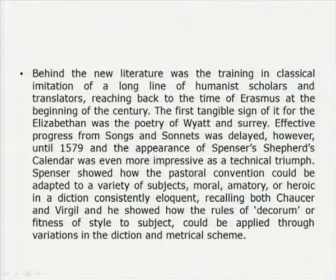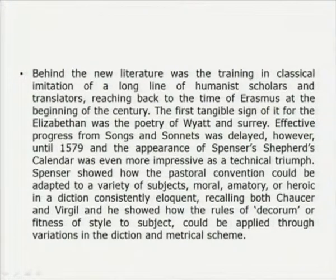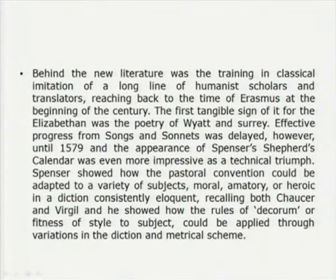Behind the new literature was the training in the classical. There was a very concerted attempt to transfer classical literature to the masses, through a tradition of classical imitation by a long line of humanist scholars and translators reaching back to Erasmus at the beginning of the century. The first tangible sign of it for the Elizabethans was the poetry of Wyatt and Surrey. Progress from Songs and Sonnets was delayed until 1579, when poetic vibrancy — which may have been imported from Italy — brought the sonnet form, practiced as a courtly form.